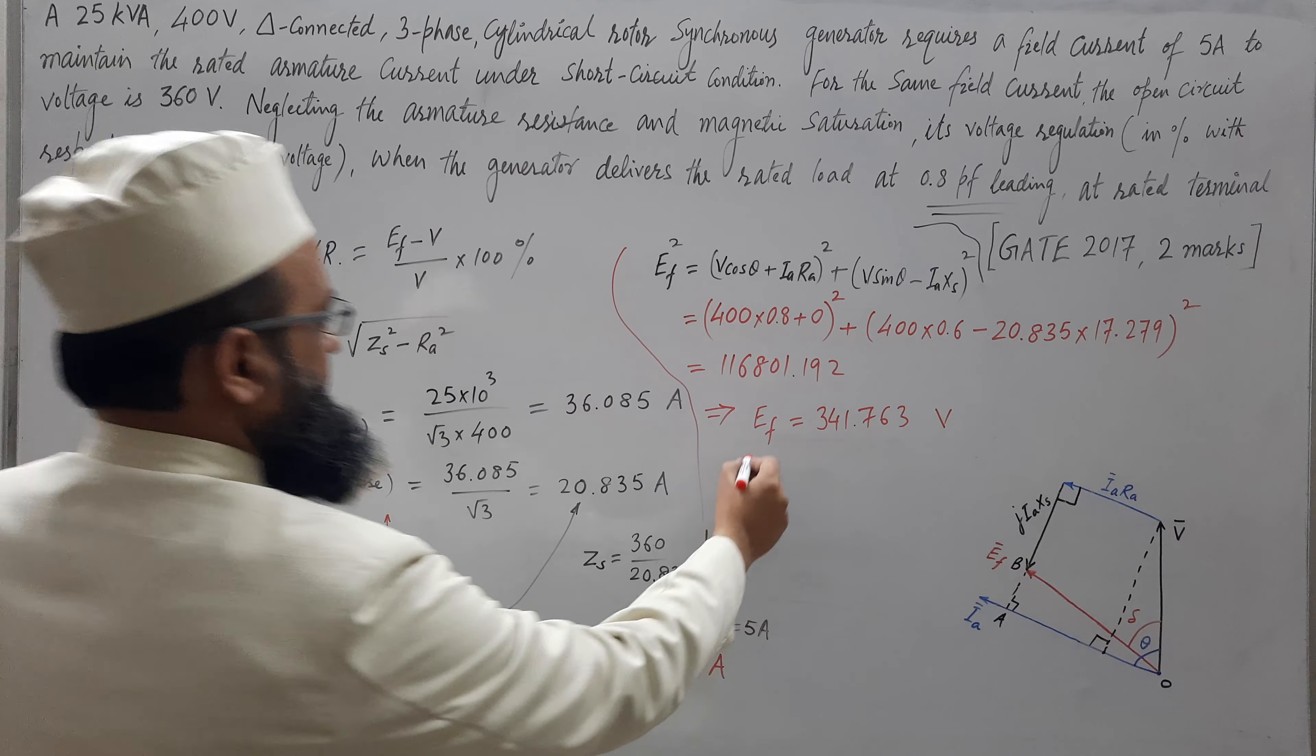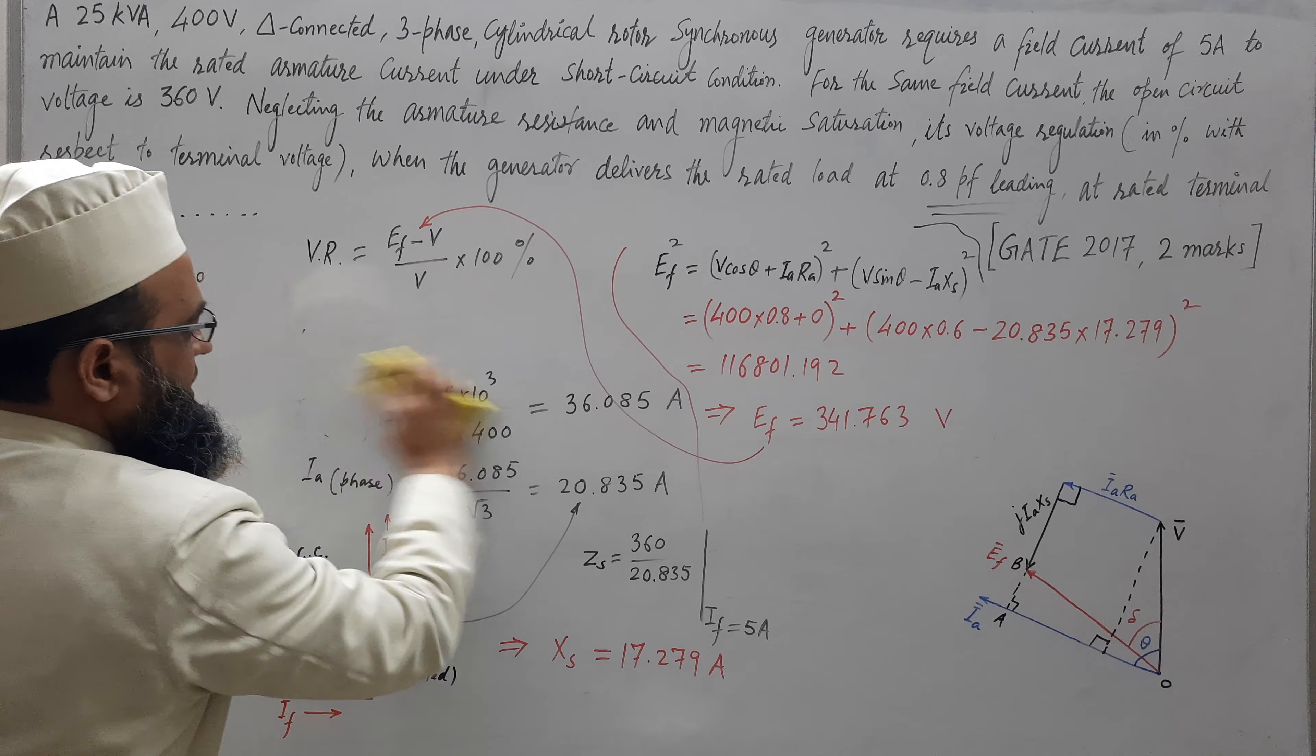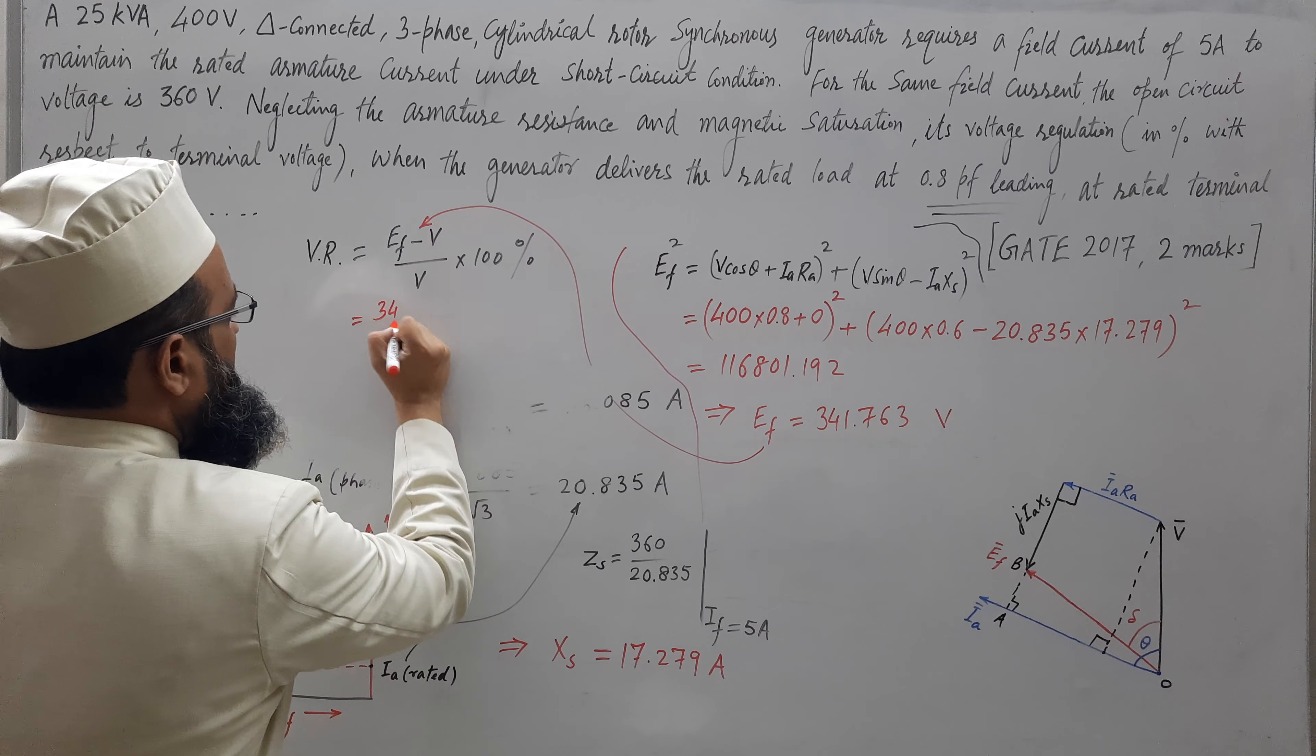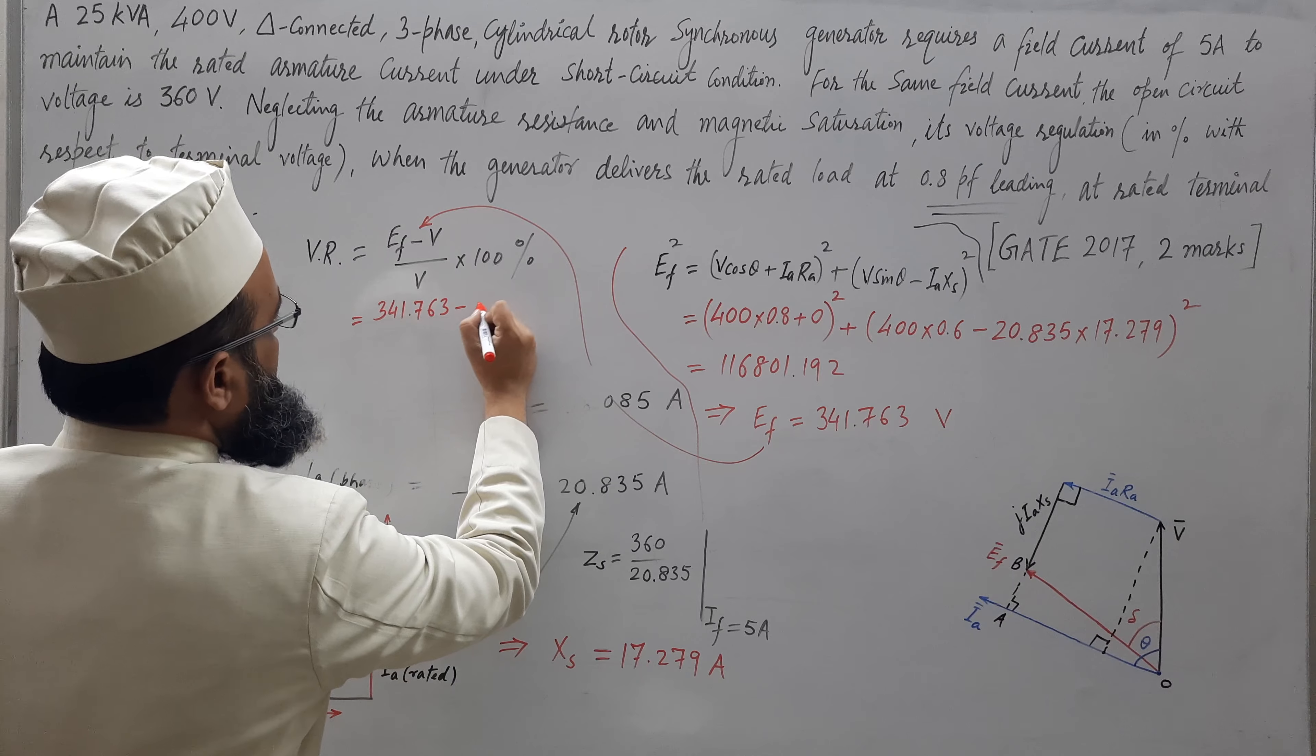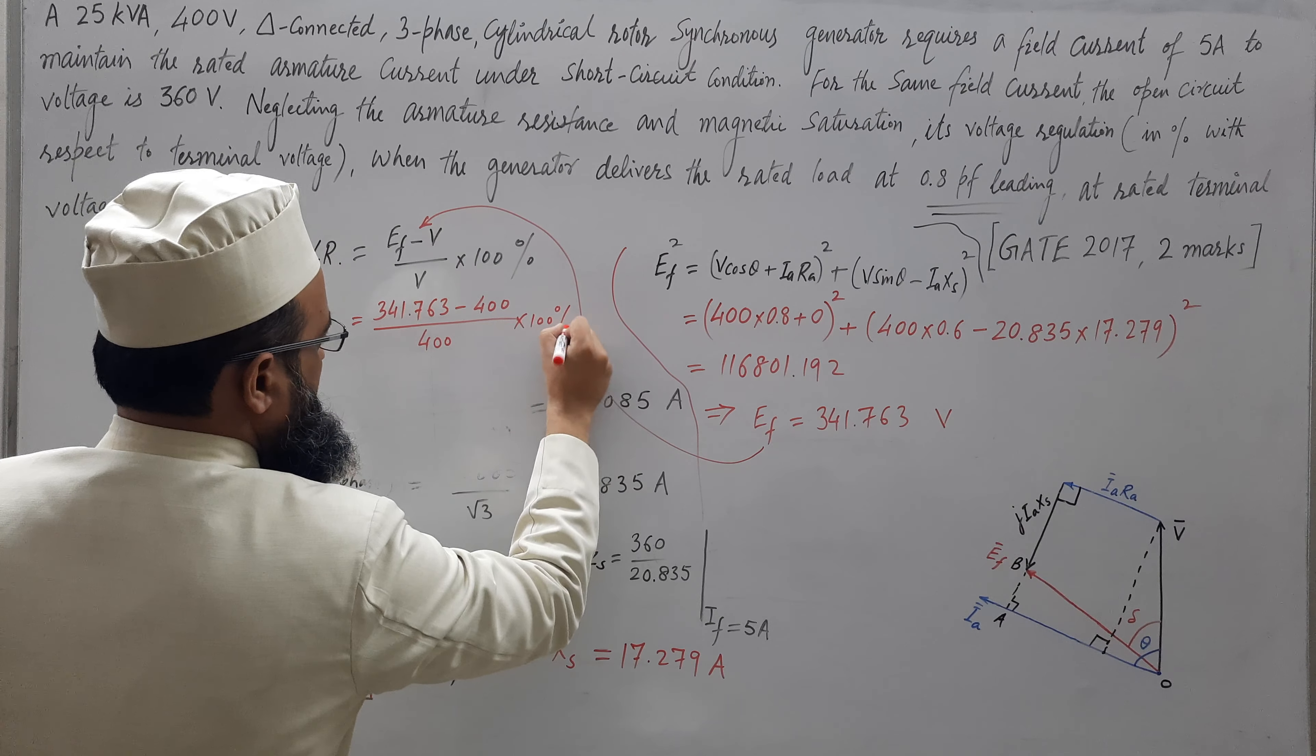Hence, substitute the value of EF here in formula. So, we will get this voltage regulation as 341.763 minus per phase terminal voltage rated 400 upon V is 400 into 100 percent.